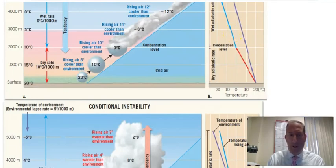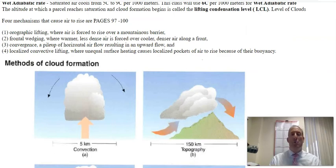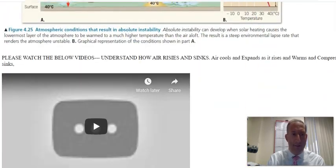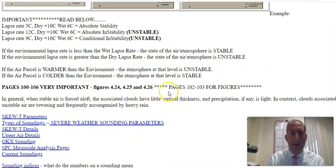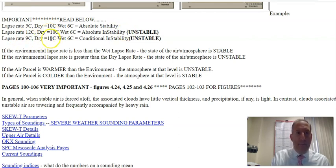Going back to Chapter 4: there are four ways to get air to rise — orographic lifting, frontal wedging, convergence, and localized convective lifting. The lifting condensation level, which would be given on test questions, is where cloud cover forms. Regarding lapse rates: below 5°C per 1,000 m is stable; above 10°C per 1,000 m is unstable; between the dry and wet adiabatic lapse rates is conditionally unstable.